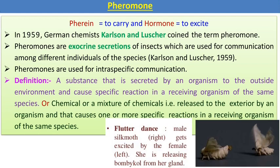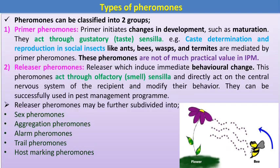The definition: a chemical or mixture of chemicals released to the exterior by an organism that causes one or more specific reactions in a receiving organism of the same species. Pheromones are used in communication between individuals of the same species. For example, the flutter dance is done by the male silk moth, while the female releases bombykol from her gland — that is communication between male and female of the same species.